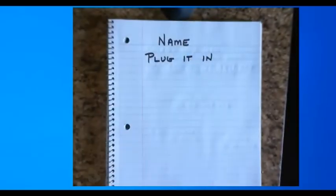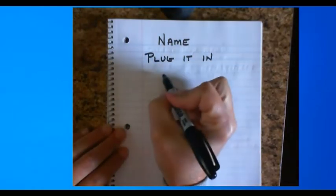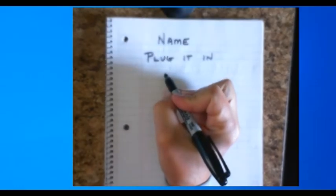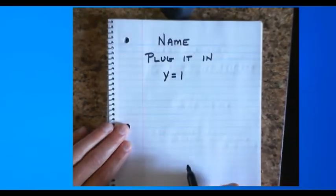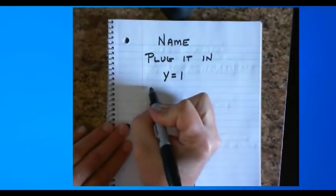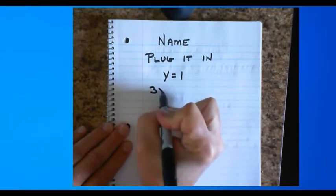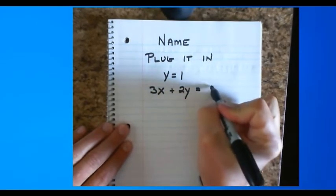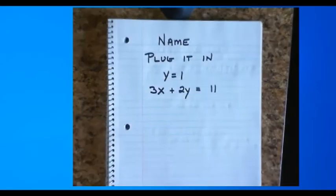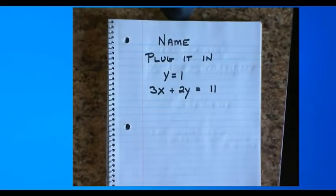And we've done a similar lesson like this recently. Why isn't this focusing? There we're just gonna do another type of plug-it-in thing. So, in this case, we're gonna take a value y equals 1. And we're gonna plug that into an equation in standard form. 3x plus 2y equals 11. And my goal here is to figure out what is x.